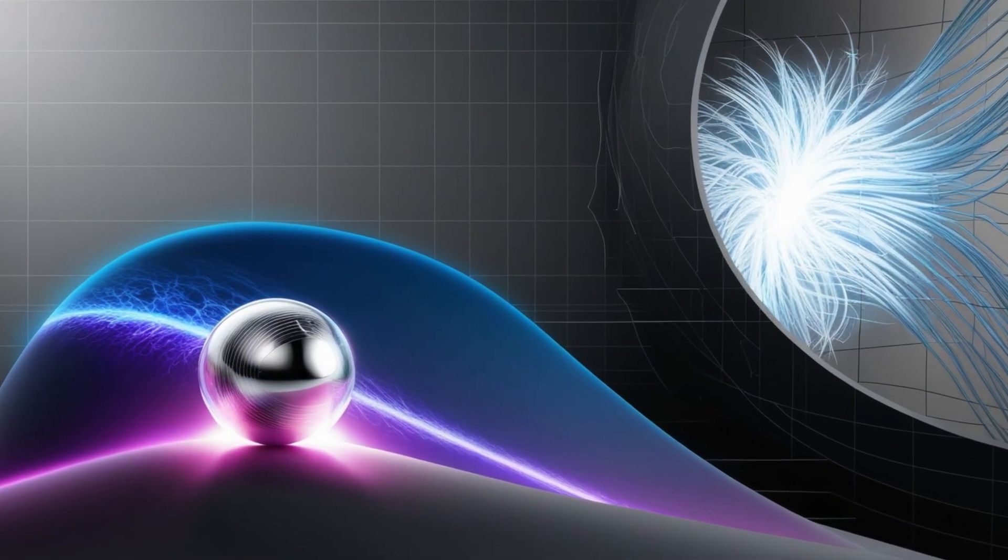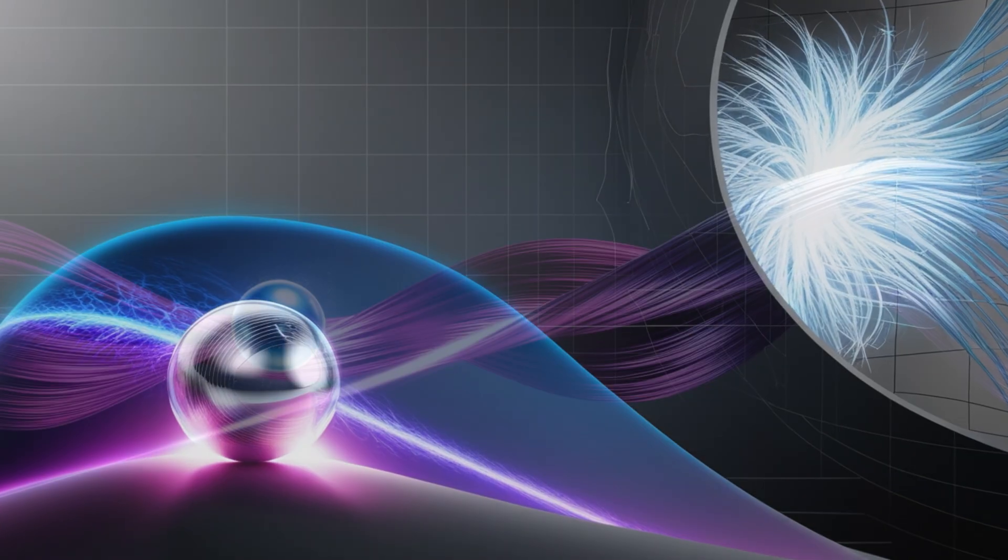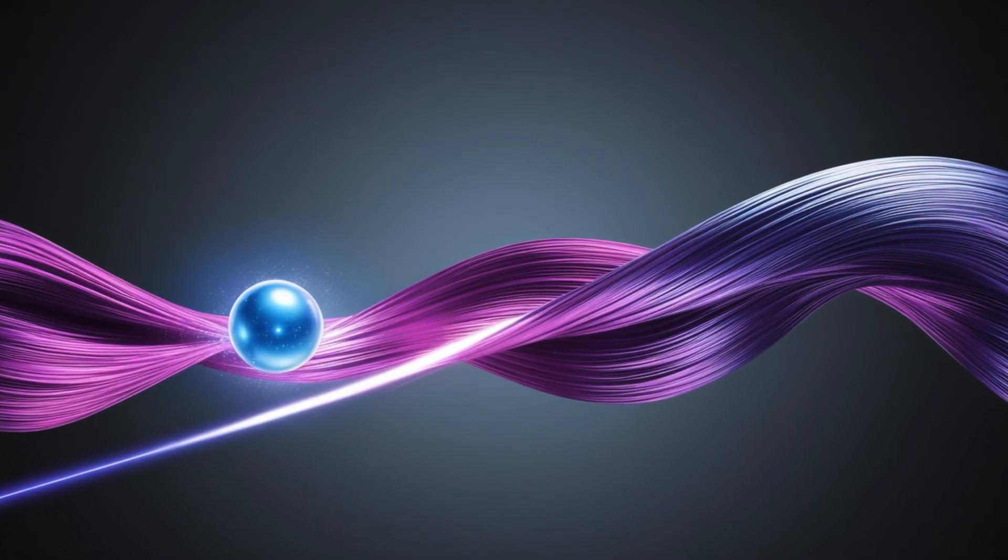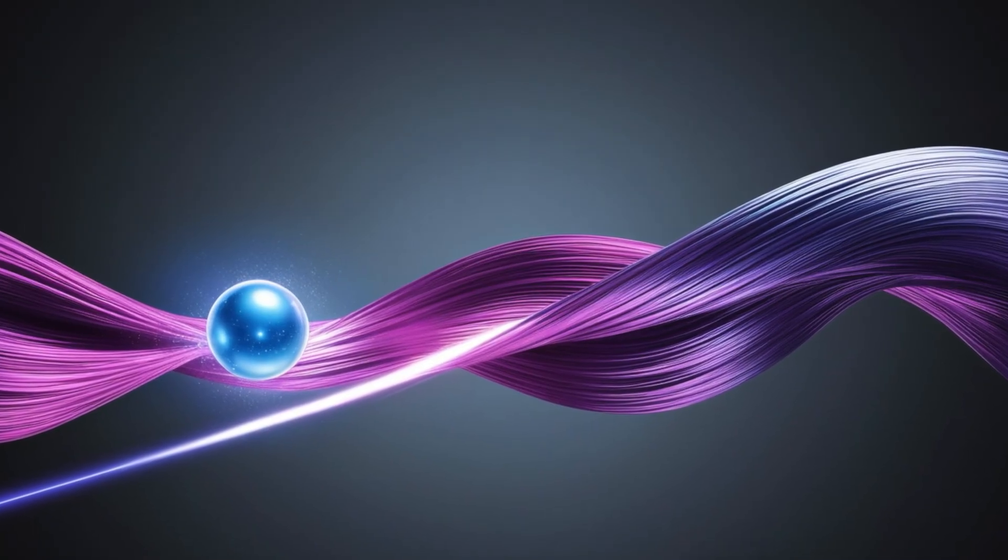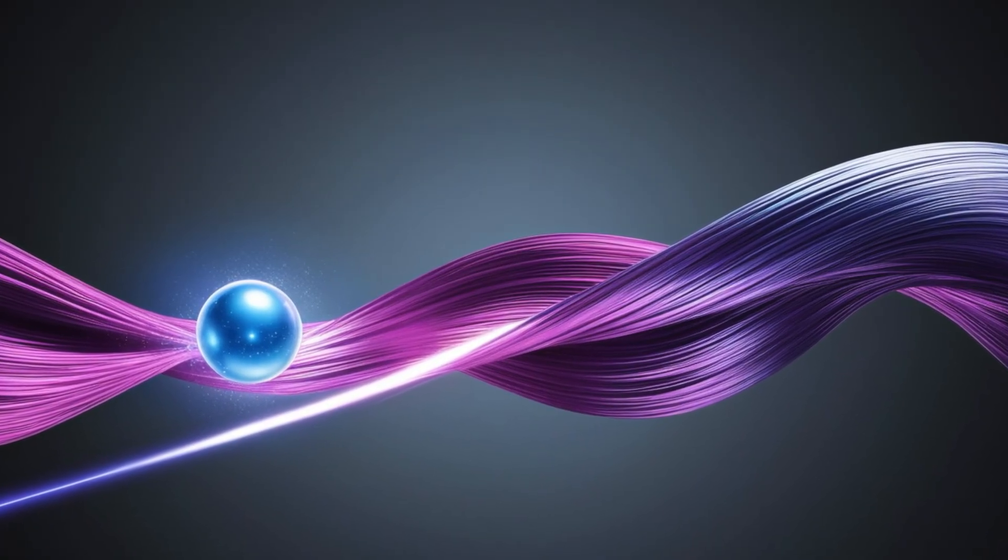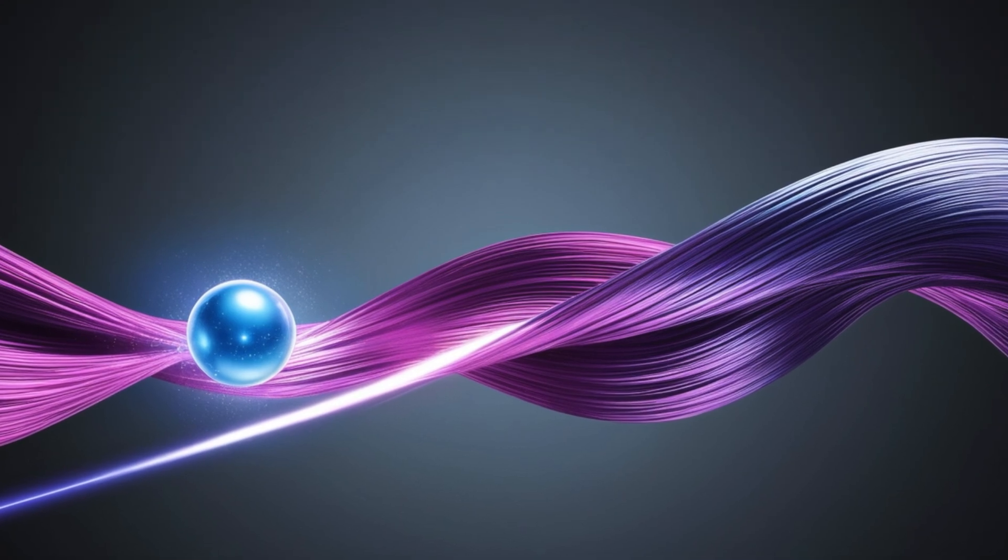Energy is king. You either have enough to get over the barrier, or you don't. Now zoom into the quantum world. Replace the ball with an electron. Replace the hill with an energy barrier. Classical logic says no crossing without enough energy.